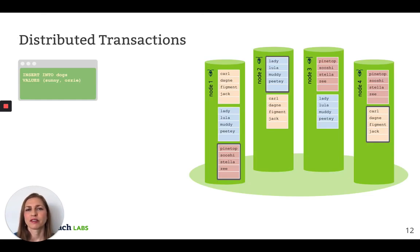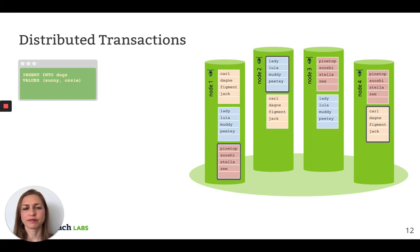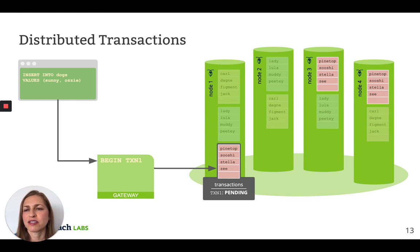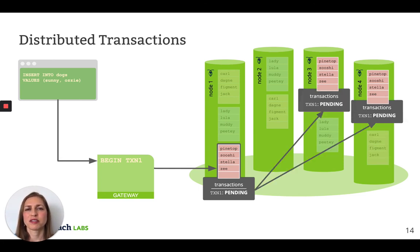Let's look at a simple example so you can better understand how transactions work in practice. I'm going to start by showing you an older suboptimal version of the algorithm since it's a bit easier to understand. What you see here is a cluster with three ranges spread across four nodes. The leaseholders for each range are highlighted with a black outline. This insert statement is inserting two rows into our dogs table: Sunny and Aussie. To begin, the client connects to a gateway node, which connects to the leaseholder for the range containing Sunny. Since Sunny is the first key written as part of the transaction, the transaction record is created on the range containing Sunny. To replicate the transaction record, the leaseholder proposes a Raft command, which writes the record to itself and the follower replicas.